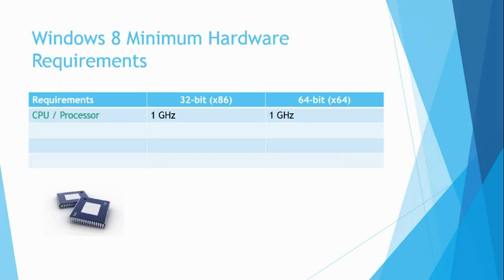The second minimum hardware requirement for Windows 8 is the RAM memory requirement. For a 32-bit version of Windows 8, this is 1 GB. If you are installing the 64-bit version of Windows 8, this is increased to 2 GB.